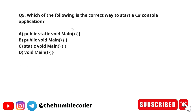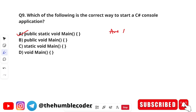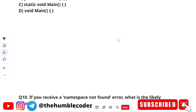Which of the following is the correct way to start a C sharp console application? The options are: A) public static void Main, B) public void Main, C) static void Main, and D) void Main. The correct answer is option A — public static void Main.